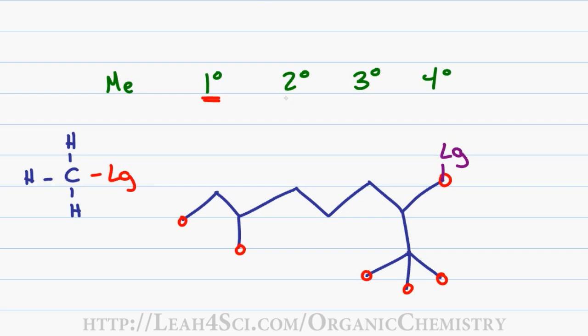A secondary carbon is a carbon that has two other groups attached to it. For example, this carbon here is attached to one carbon on the left and one carbon on the right. If we place a leaving group on a secondary carbon, this is considered a secondary leaving group.